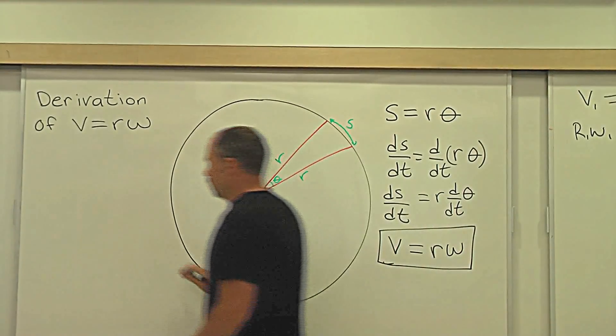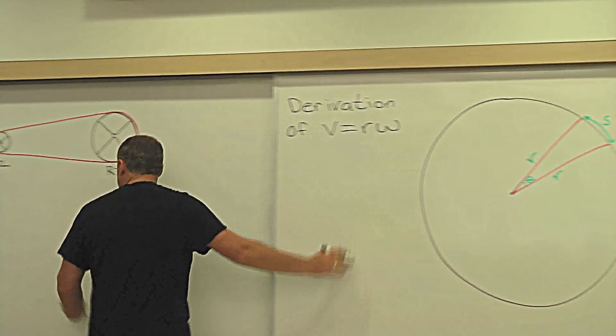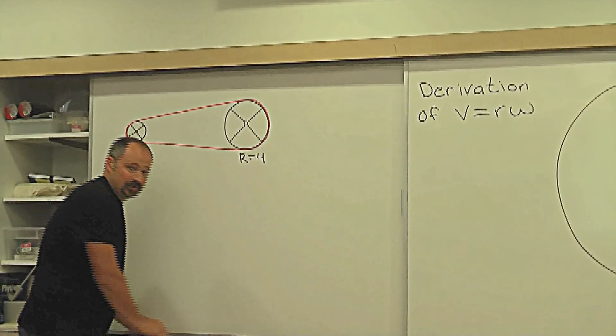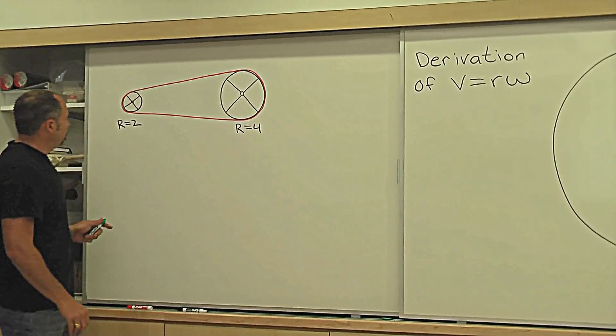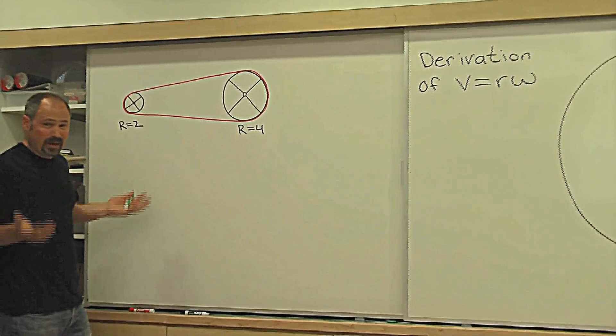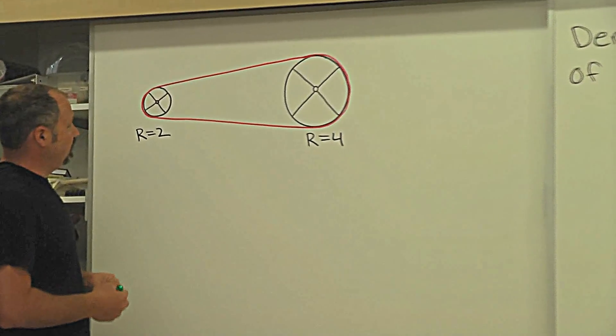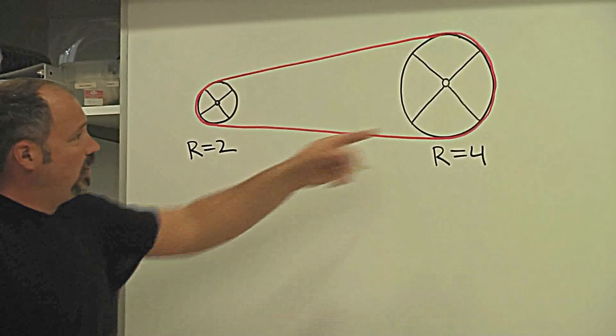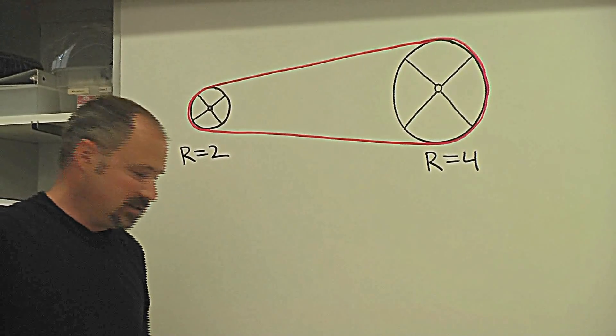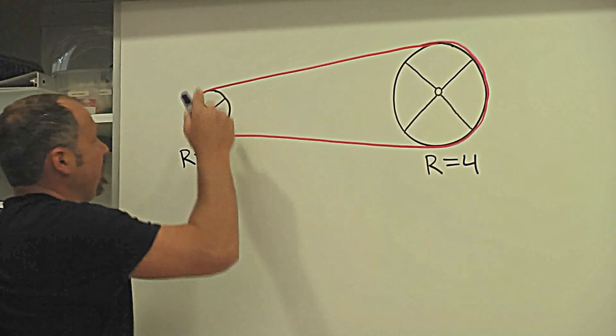Let's do an example with this formula. So we have here, for example, it might be your bicycle. We have the two sprockets. One is twice as large as the other. They're connected by a chain.